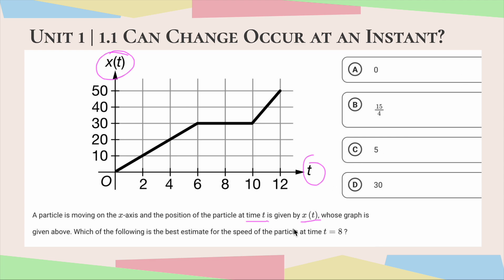So now, whose graph is given above? Which of the following is the best estimate for the speed of the particle at time t equals 8? So right here. So the key thing we need to know here is we need to understand how position and time relate to speed.